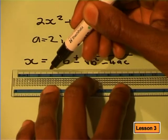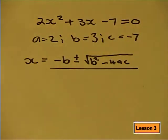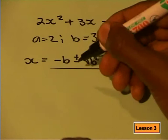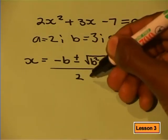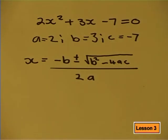Now I substitute that into the formula minus b plus or minus the square root of b squared minus 4ac, all divided by 2a, which gives me...